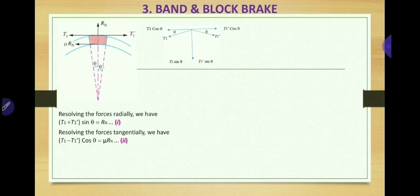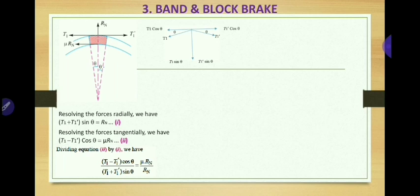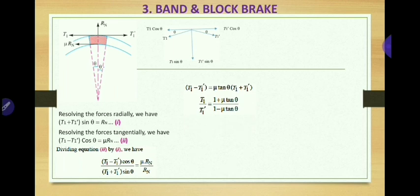We have resolved all forces T1 and T1' horizontally and vertically. Taking the ratio of the tangential equation divided by the radial equation: (T1 - T1') cos θ / (T1 + T1') sin θ = μ × Rn / Rn. Cancelling Rn and rearranging: (T1 - T1') = μ tan θ × (T1 + T1'). Rearranging further, we obtain: T1 / T1' = (1 + μ tan θ) / (1 - μ tan θ).